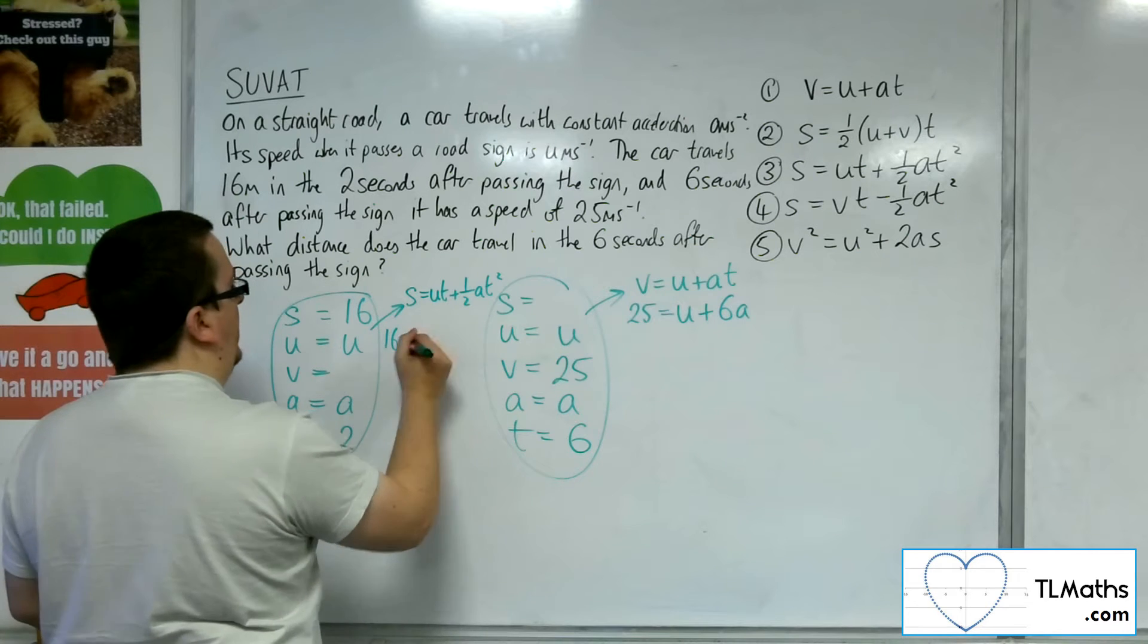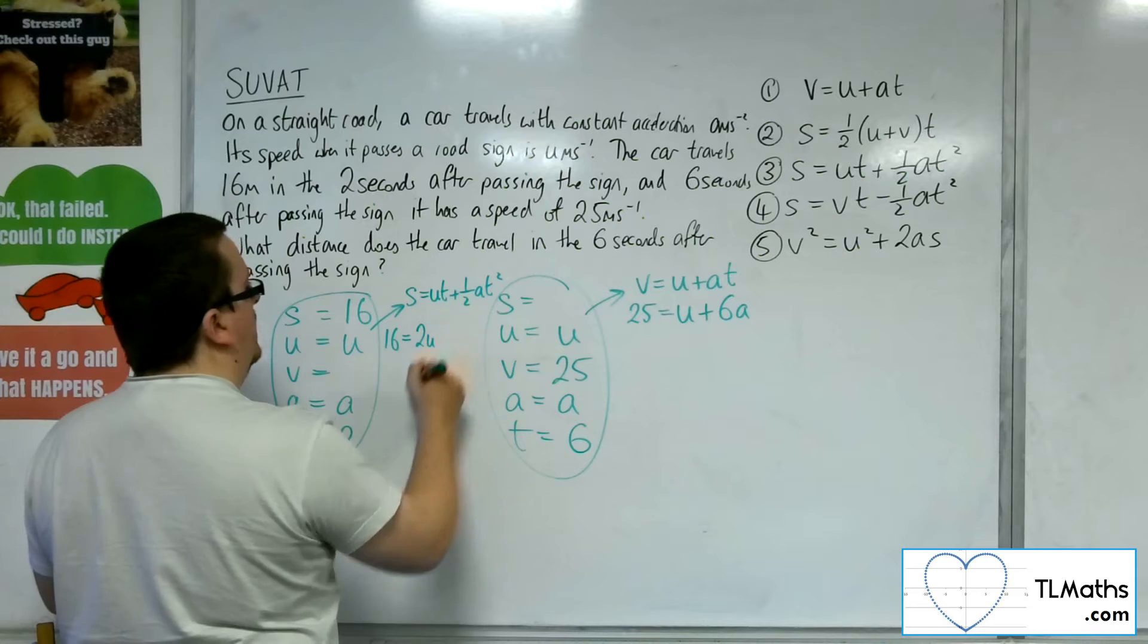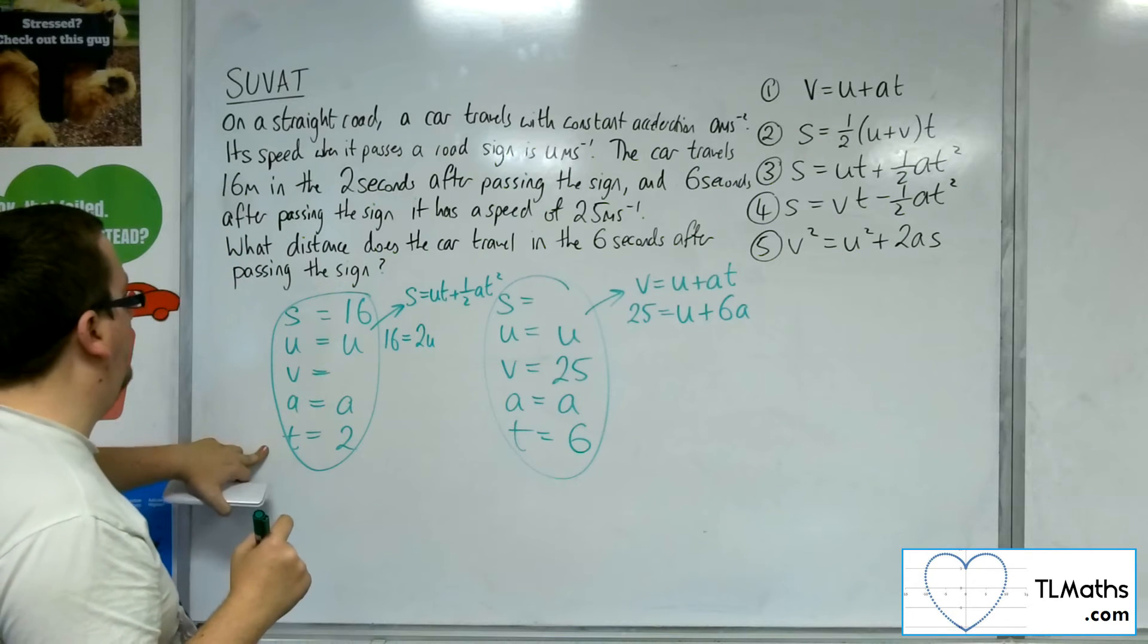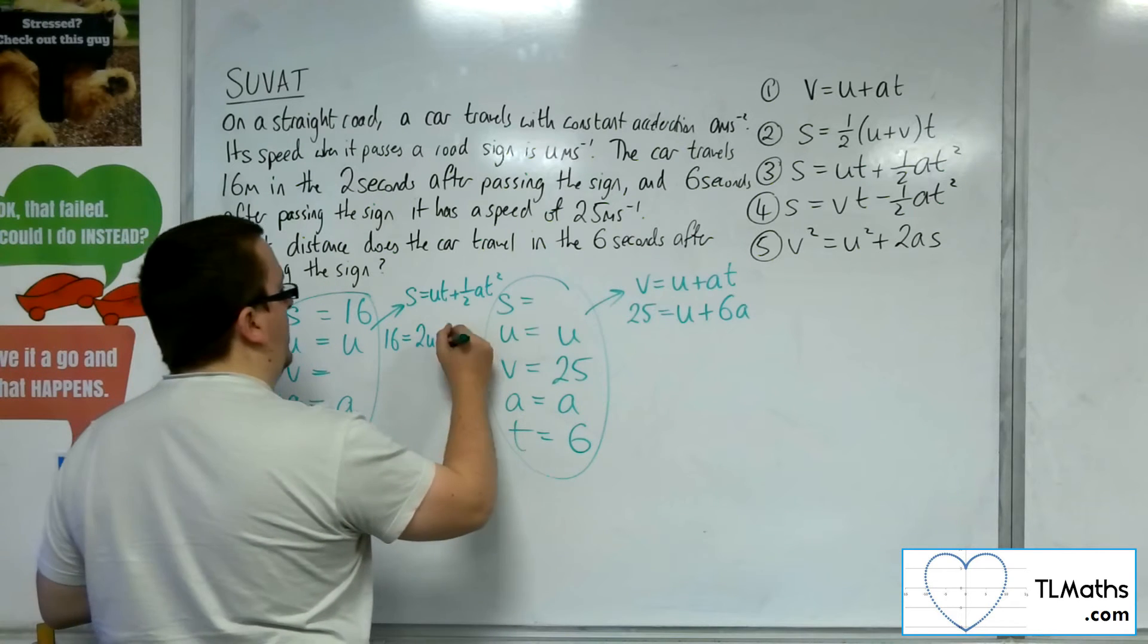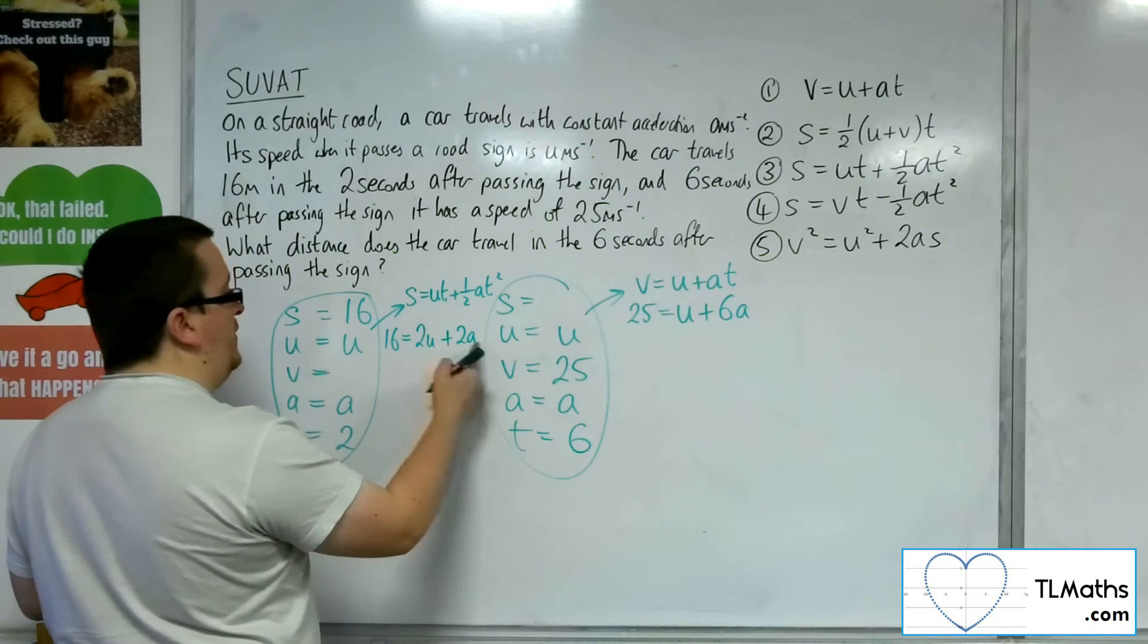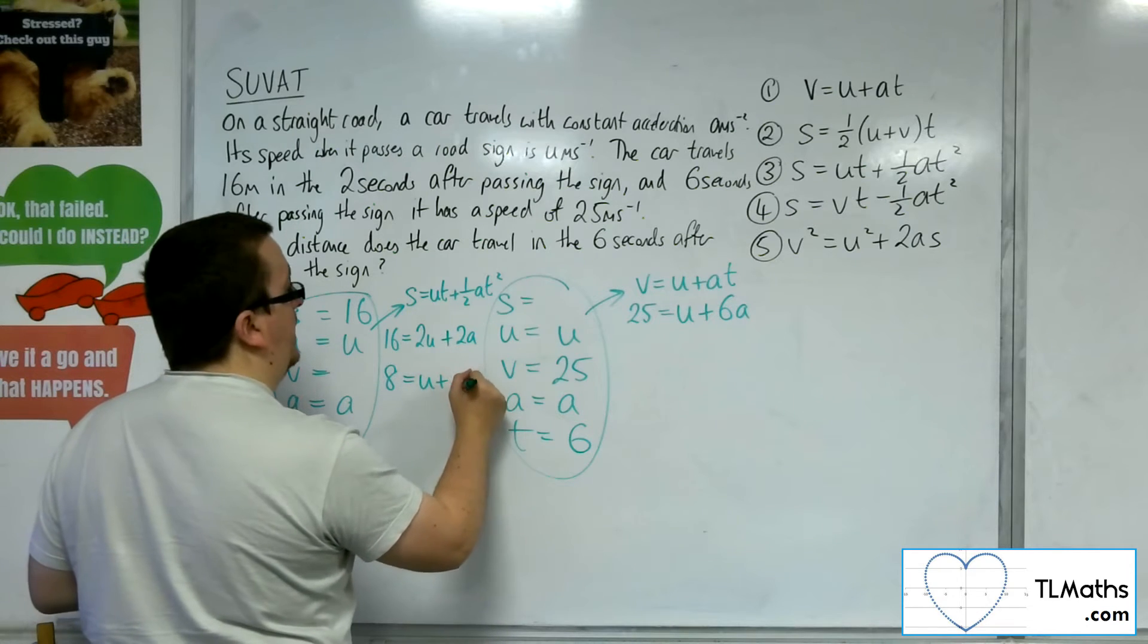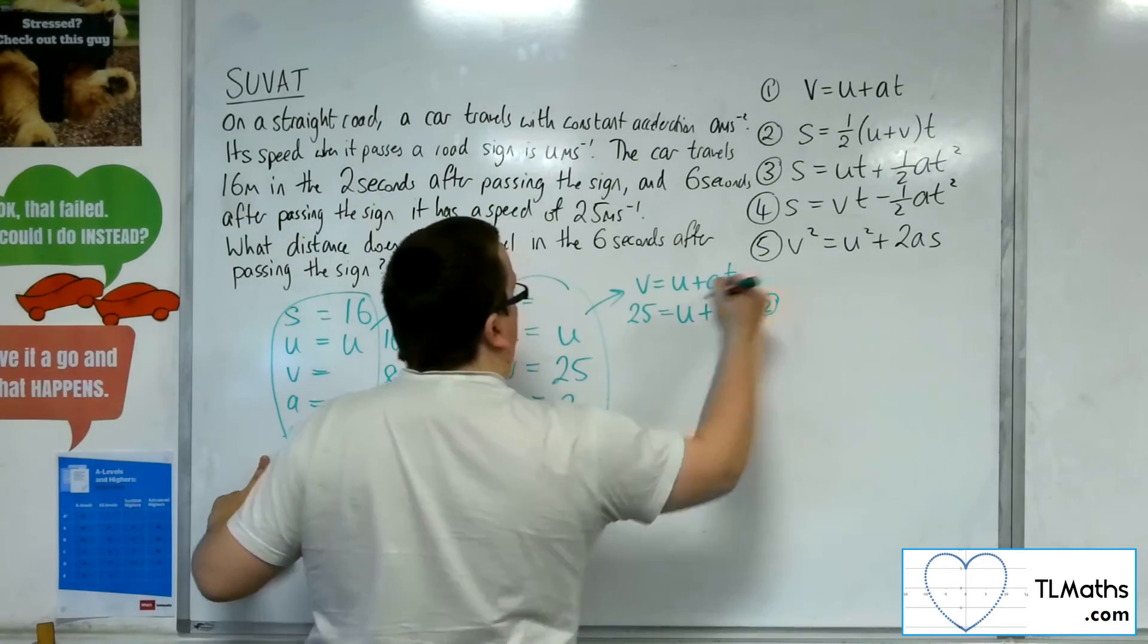So we've got 16 is equal to u times t so 2u plus one half times a times t squared. So t squared is 4 so half that's 2 so it'd be 2a. So if I divide that equation through by 2 I've got 8 is equal to u plus a. So there is one equation and there is a second equation.